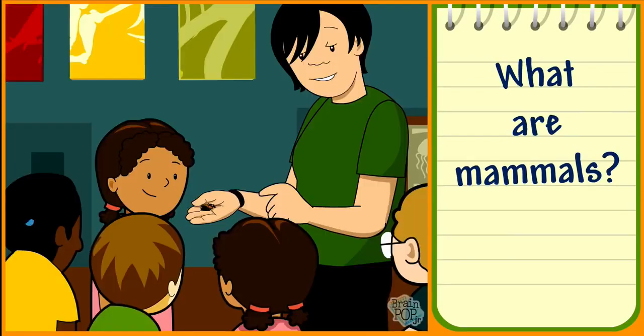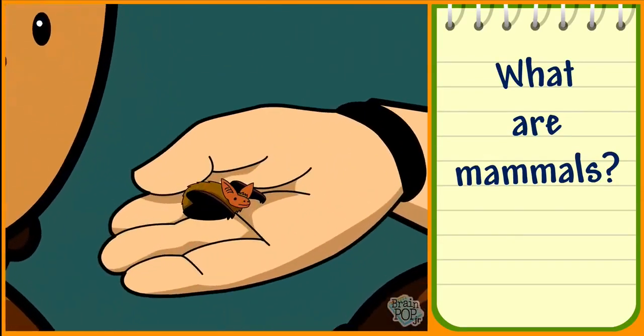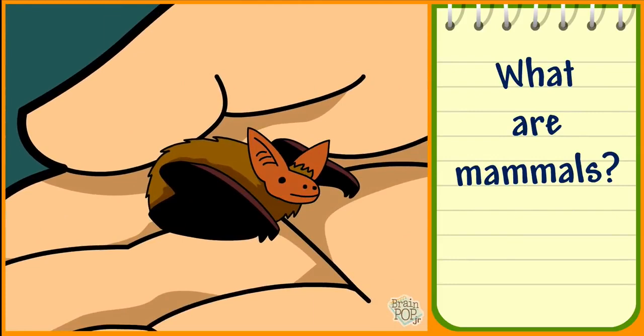The smallest mammal in the world is the bumblebee bat. It's about the size of a thumb.